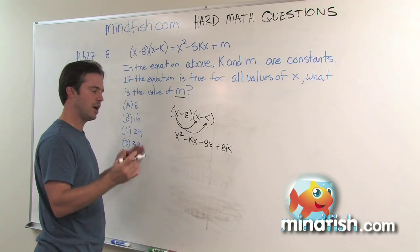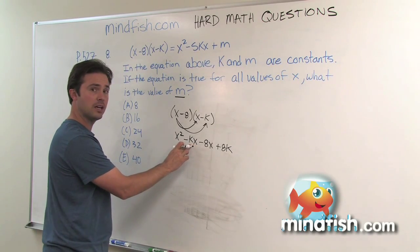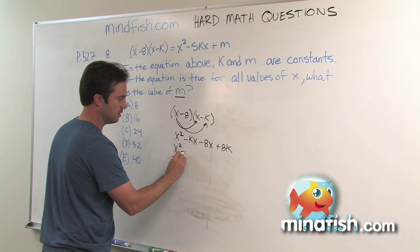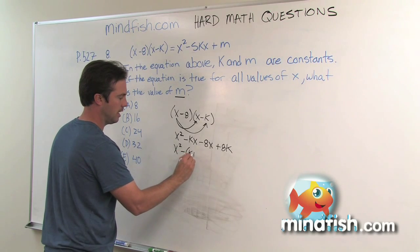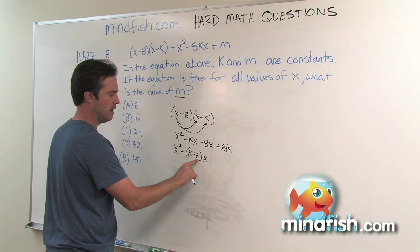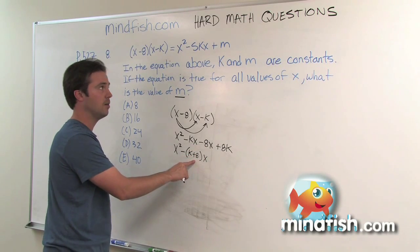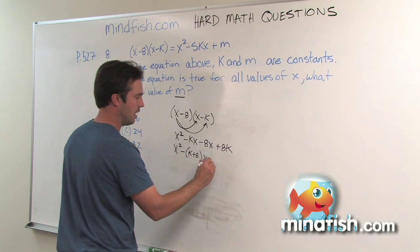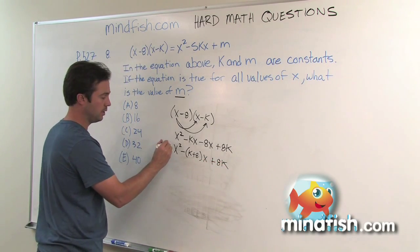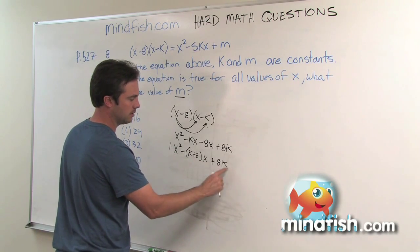Most of you can do that step. The challenge is that if this said negative eight k and negative two k, you could easily say that's negative ten k. But what most people struggle with is the next step. I'm going to turn this into negative k plus eight times x. The minus still applies to both the k and the eight, and they both still multiply by x. So these are the same — it's just easier for the next step. And then plus eight k. So now we've got an x squared term with a coefficient of one, an x term with a coefficient of k plus eight, and a constant term of eight k.